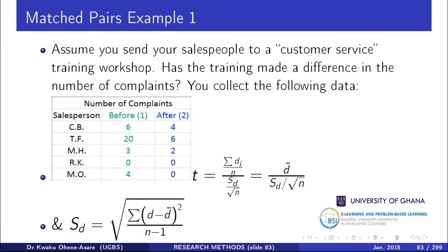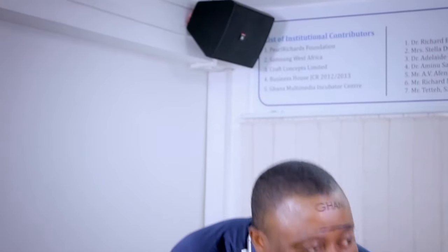Who benefited the most from the training? TF reduced from 20 complaints to 6 — a large absolute reduction. MO reduced from 4 to 0. However, for every one complaint MO reduced, TF reduced complaints four times over. In relative terms, TF benefited the most from the training exercise.